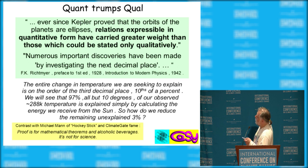Feynman also makes this point that important discoveries are made by investigating the next decimal point. And one of the things is, this will immediately explain 97%, all but 10 degrees or so of our observed 288 K temperature.